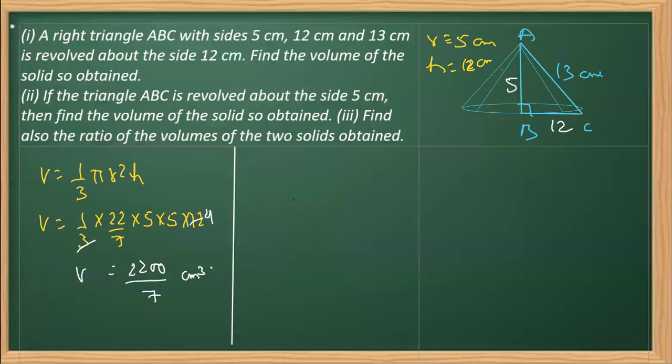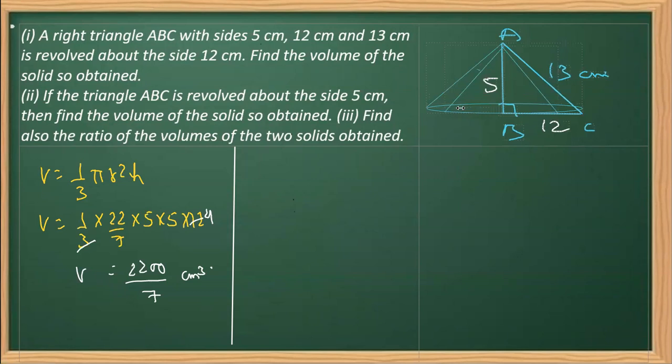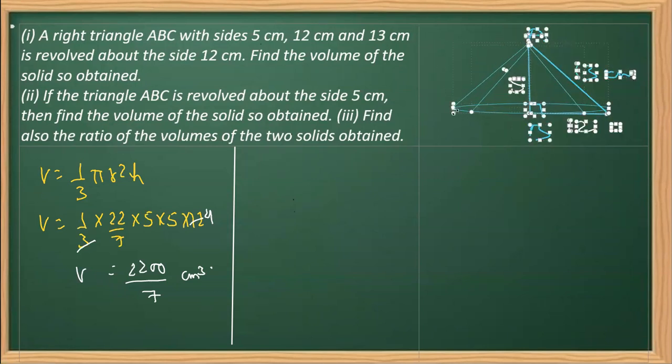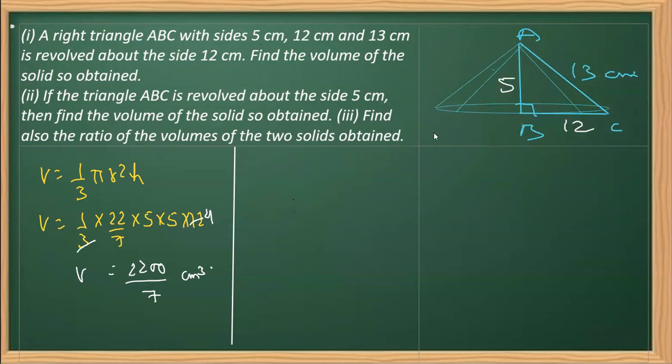The radius and height will get swapped. The side about which it is rotated is taken as the height. So the radius has now increased and the height has decreased. This time the height is 5 centimeter and the radius is 12 centimeter.